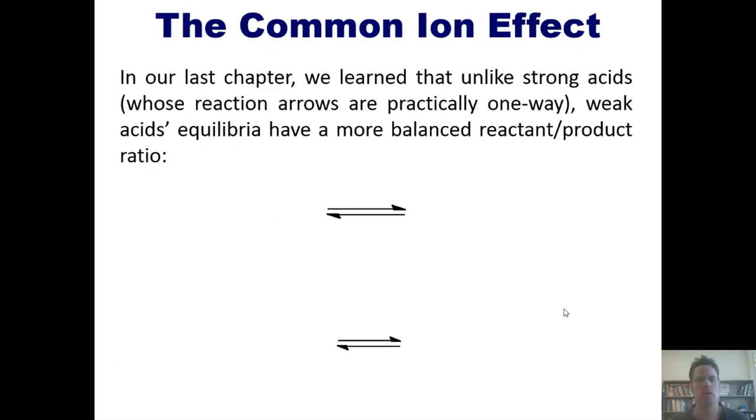In our last chapter we learned that unlike strong acids, whose reaction arrows are practically one way, weak acids equilibria have a more balanced reactant to product ratio. Weak acids dissociate in a back-and-forth arrow way, in an equilibrium way, to release their conjugate base as A- and H3O+, according to this generic equation.